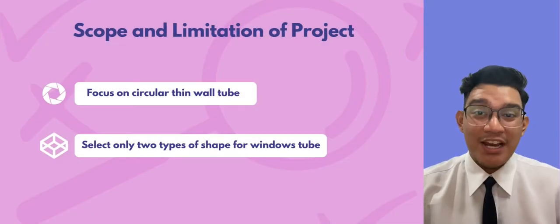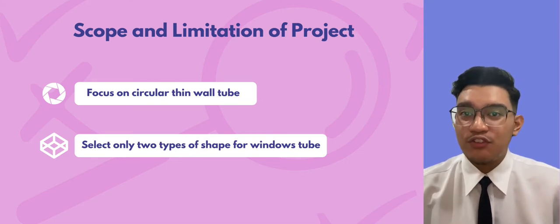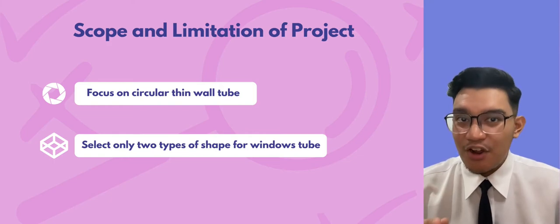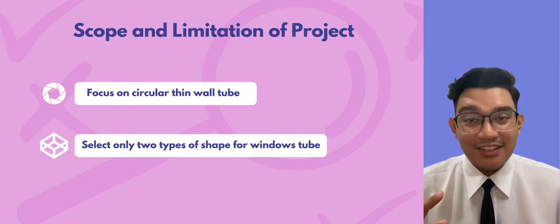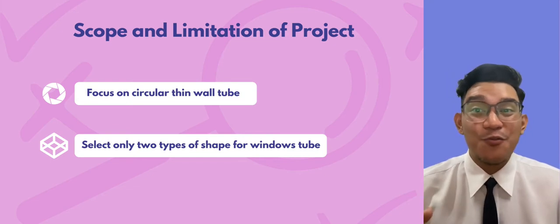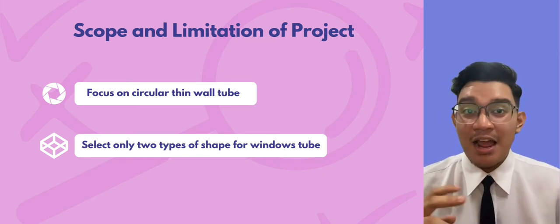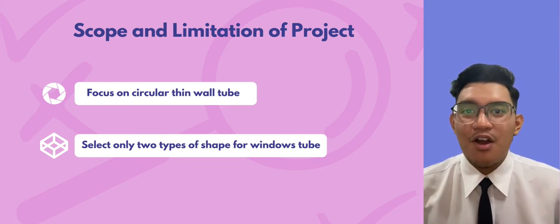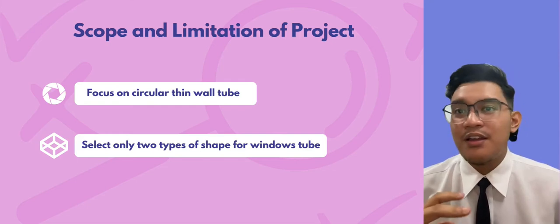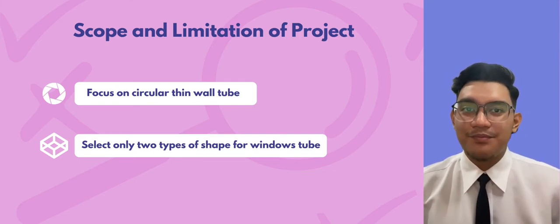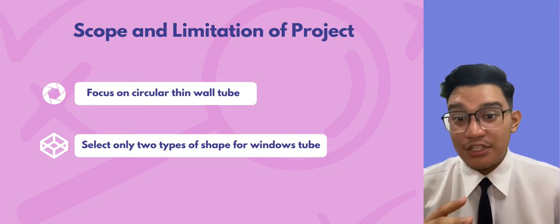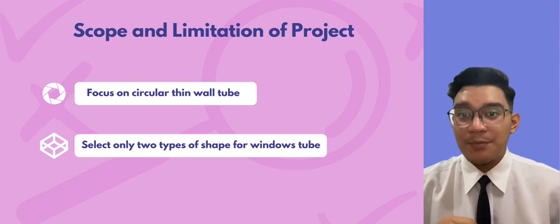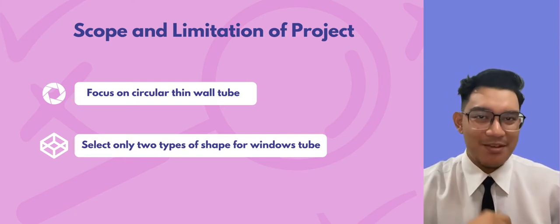The study has several limitations due to a lack of instruments and equipment. The research will focus completely on circular thin wall tubes, and the results and data are applicable for this type of tube only. There are two types of window shapes: circular and rectangular. The use of CNC machines is limited for students due to lab session procedures during this pandemic era.